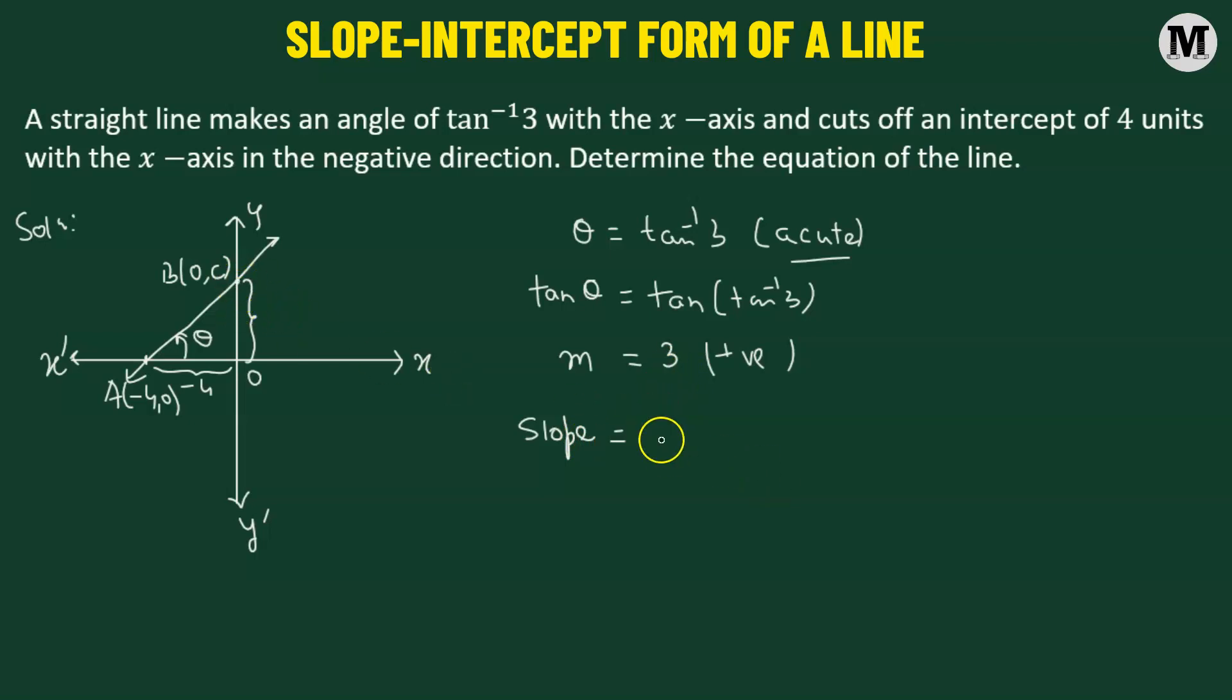So here, what we'll do? We need y2 minus y1 and divide it by x2 minus x1. So here, let's say A corresponds to x1 comma y1 and B corresponds to x2 comma y2. Such that we now have y2 minus y1, so that will be... y2 value is C.